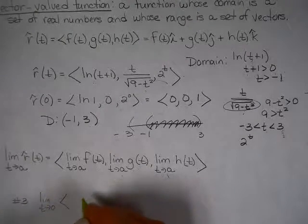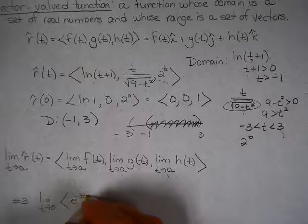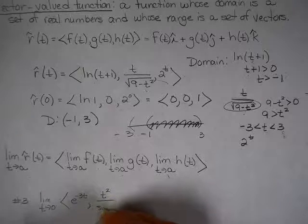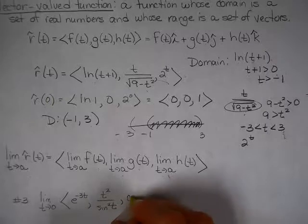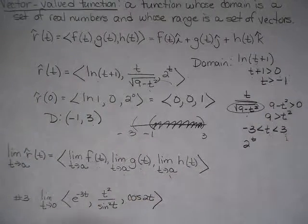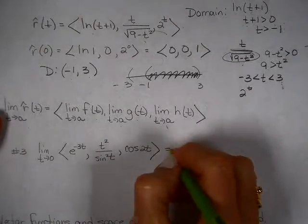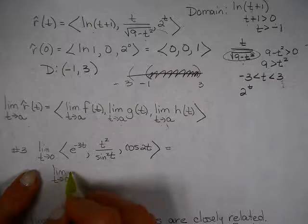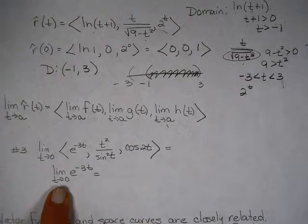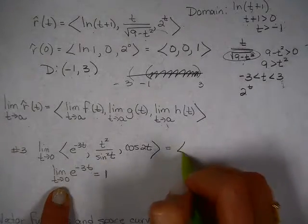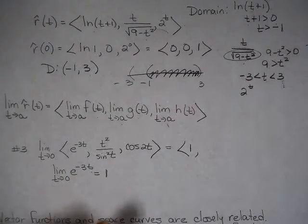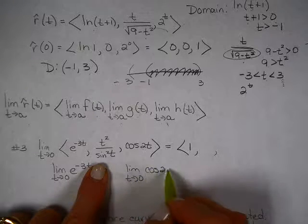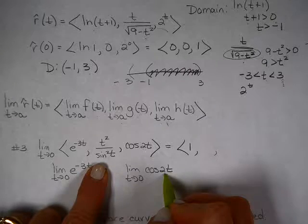The limit as t approaches 0 of e to the negative 3t... So what you do is just take the limit of each of these pieces. So you take the limit as t approaches 0 of e to the negative 3t. In this case, all you do is substitute in. e to the 0 power is going to give you 1. So this is a 1. I'm going to skip the middle one for a minute. I'm going to go on to the second one, the last one. The limit as t approaches 0 of the cosine of 2t. If I substitute again, the cosine of 0 is 1.